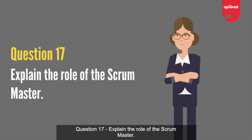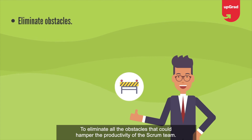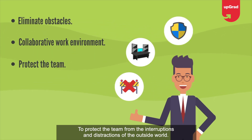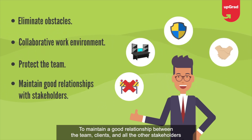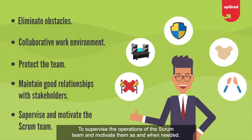Question 17: Explain the role of a Scrum Master. The Scrum Master is the leader and supervisor of the Scrum Team. Key responsibilities include: eliminating obstacles that could hamper team productivity, establishing a productive and collaborative work environment, protecting the team from outside interruptions and distractions, maintaining good relationships between teams, clients, and stakeholders, and supervising and motivating the Scrum Team as needed.